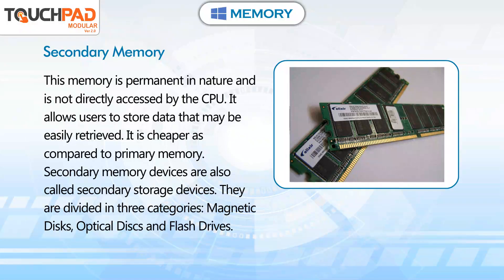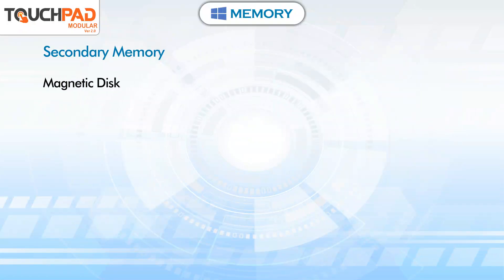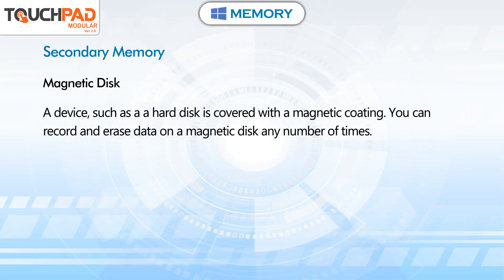The three categories are: magnetic disks, optical disks, and flash drives. Magnetic disk: a device such as a hard disk is covered with a magnetic coating. You can record and erase data on a magnetic disk any number of times.